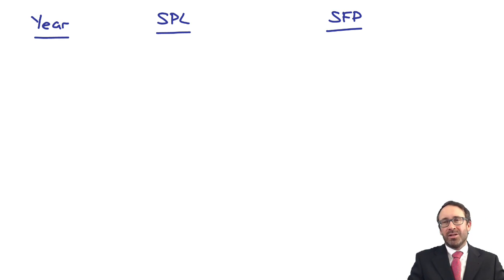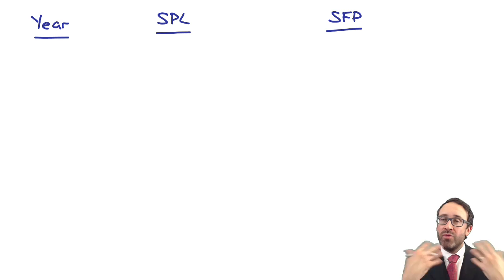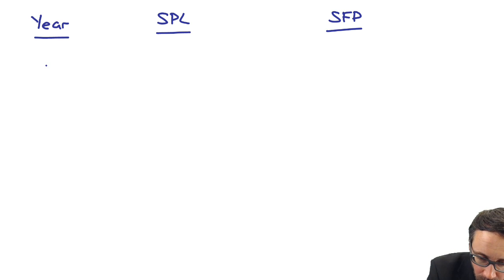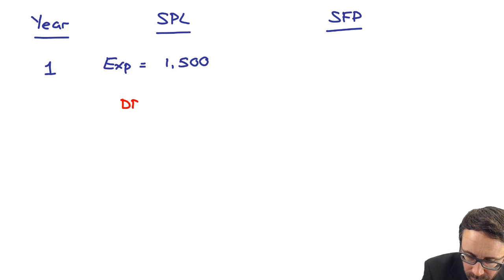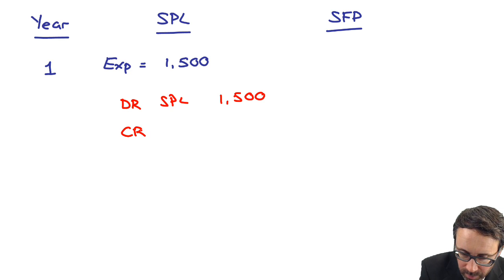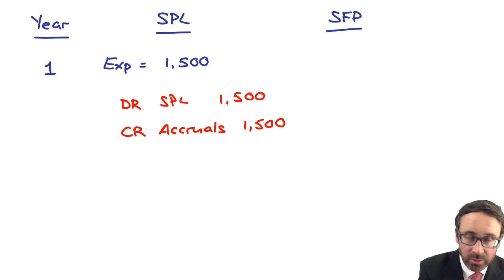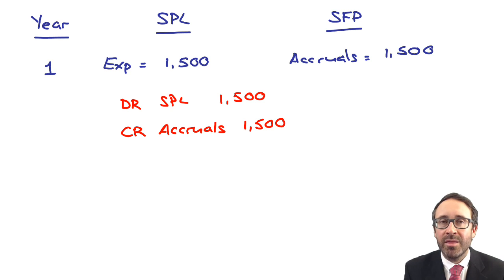You might be thinking: what's the statement of financial position impact? We're just recognising an expense. But we haven't paid the lease rental in year one — remember, year one was a rent-free period. So in year one, the statement of profit or loss rental expense is $1,500. To get that expense, we debit the statement of profit or loss with $1,500 and credit accruals with $1,500. Within your current liabilities, accruals stand at $1,500 because you've not paid anything at all in year one.